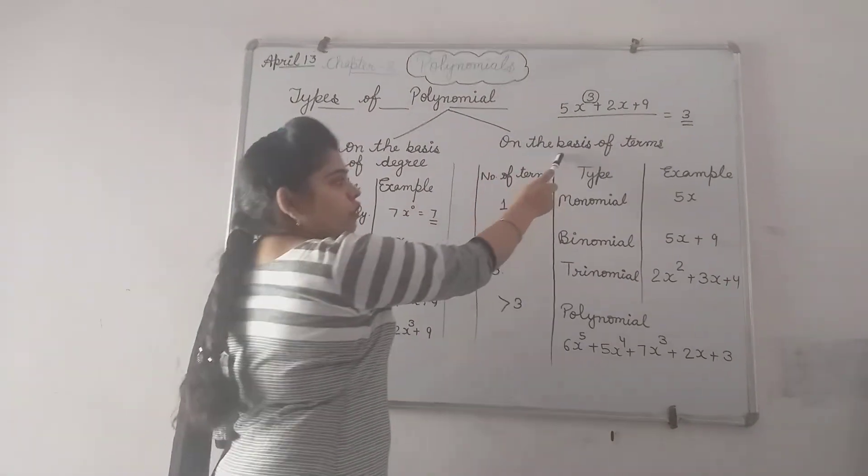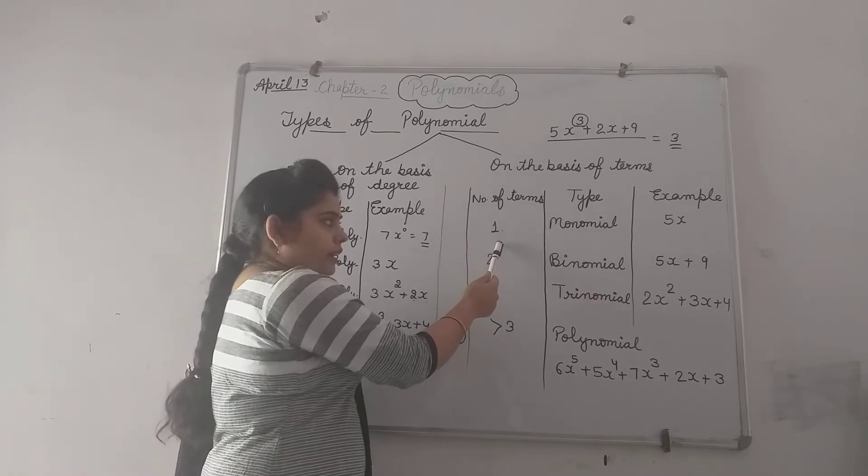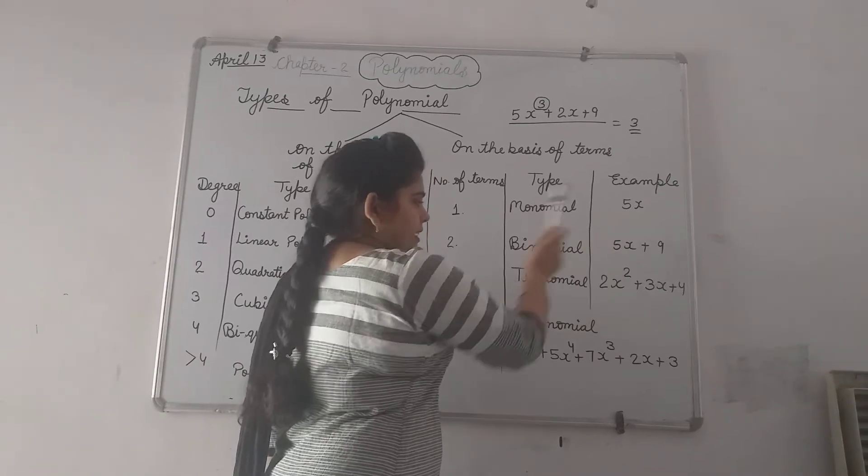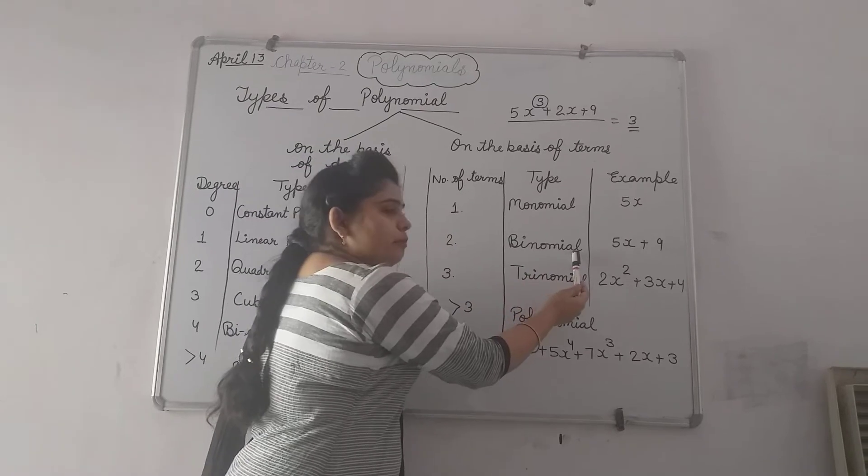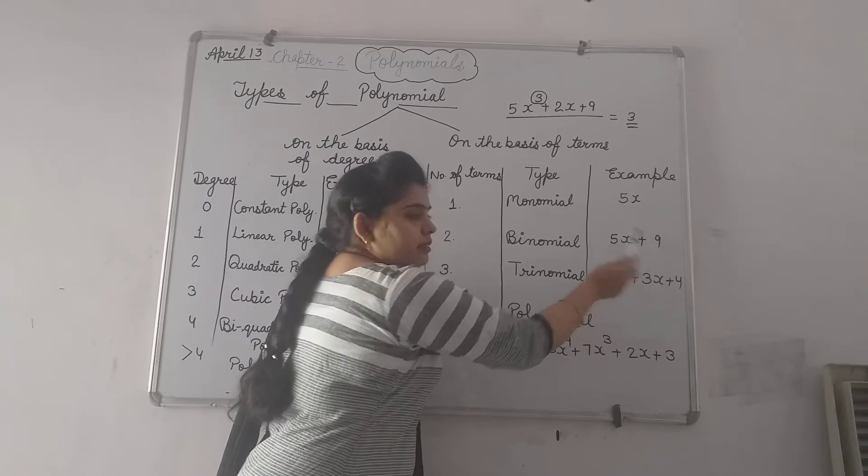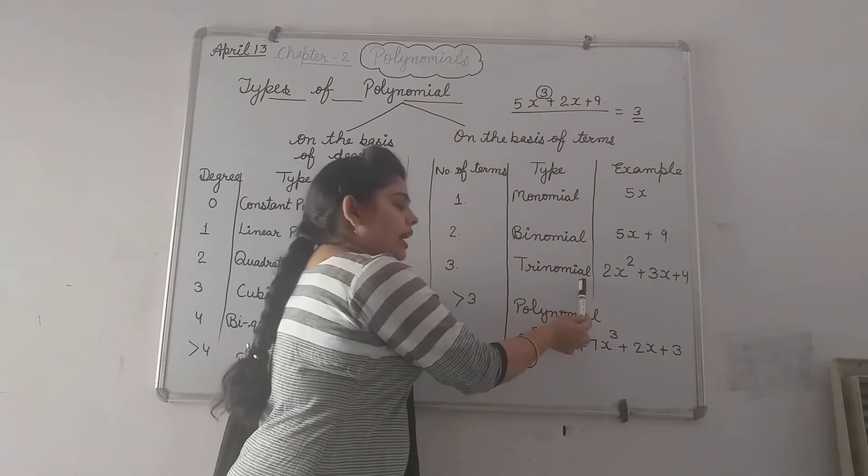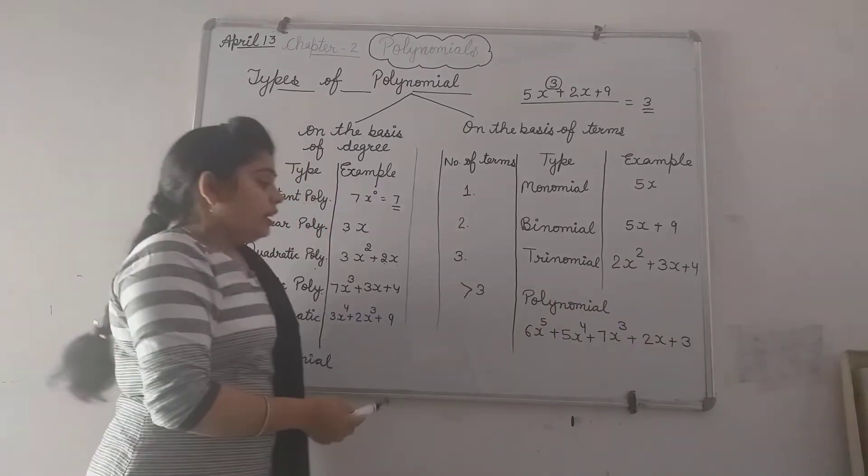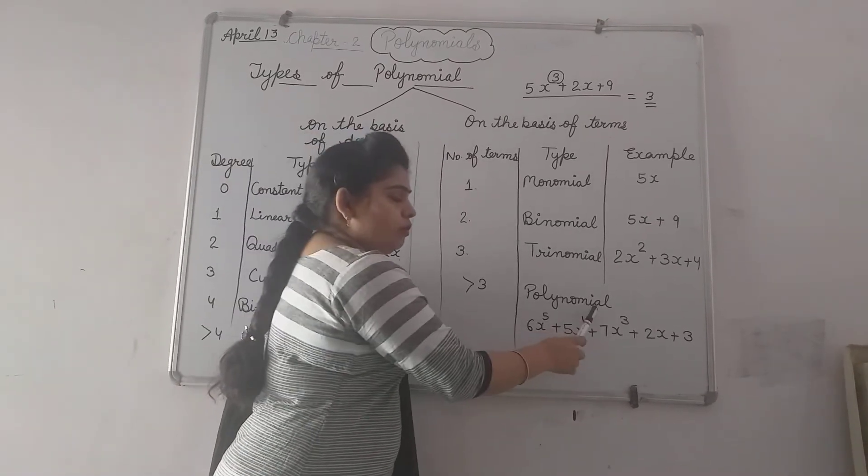Now on the basis of terms. If number of terms is 1 then it is a monomial, example 5x. If number of terms are 2 then it is called binomial, example 5x plus 9. If number of terms are 3 then these are called trinomial, example 2x square plus 3x plus 4. If number of terms are greater than 3 then these are called polynomials.